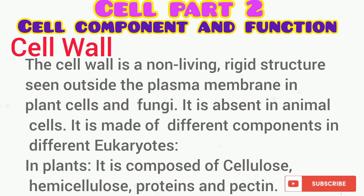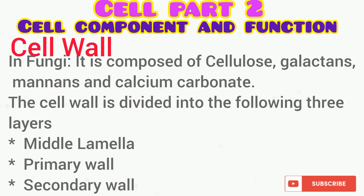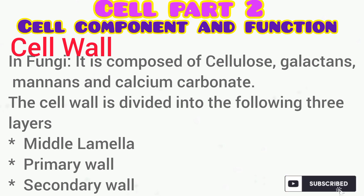In plants, the cell wall is composed of cellulose, hemicellulose, protein, and pectin. While in fungi, it is composed of cellulose, galactans, mannans, and calcium carbonate.